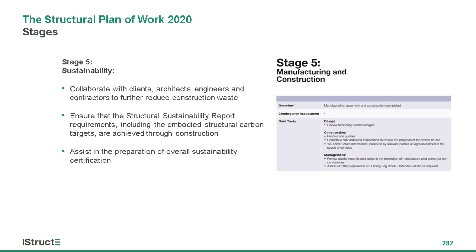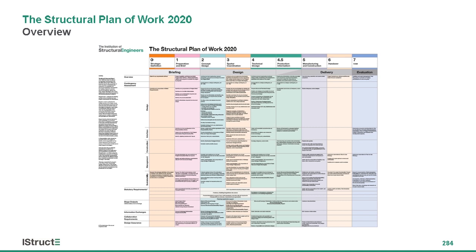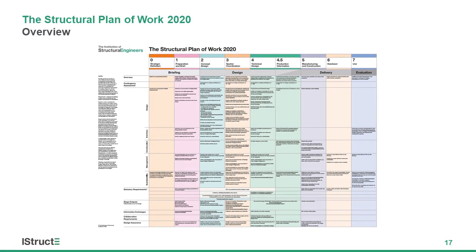Stage five is the manufacturing and construction stage. Engineers need to collaborate with people, make sure the requirements of the structural sustainability report are implemented and achieved, and potentially assist in the preparation of overall sustainability certification. Then at handover — stage six — what the sustainability targets were and the achievements need to be documented and shared with people. That's a very quick overview of the plan of work and the sustainability aspects. Please download it from the iStruct website and have a read through — there's a lot more information in the text. Thank you very much.